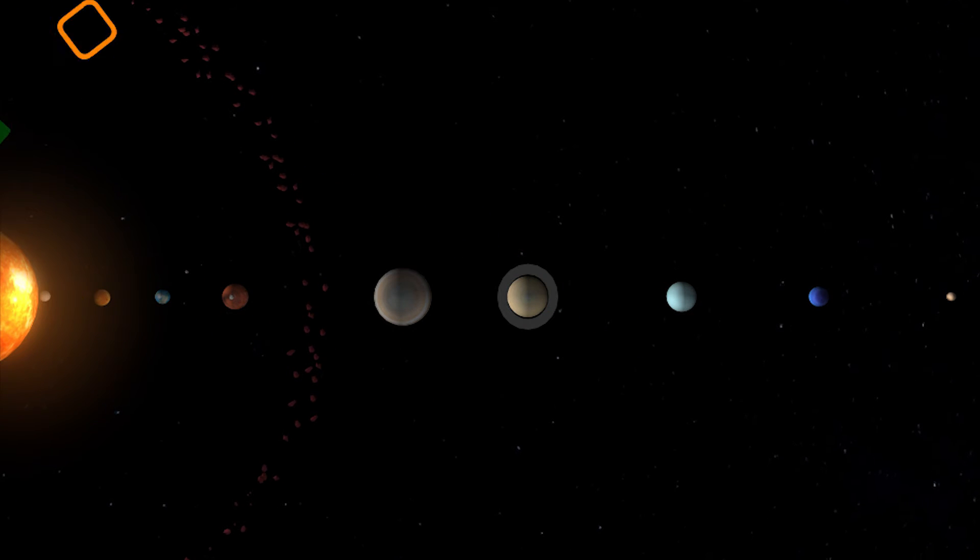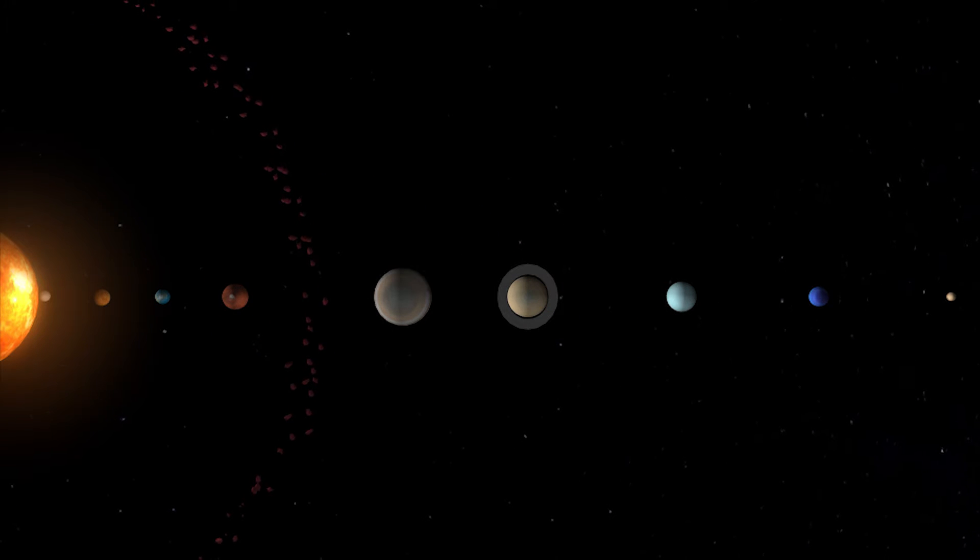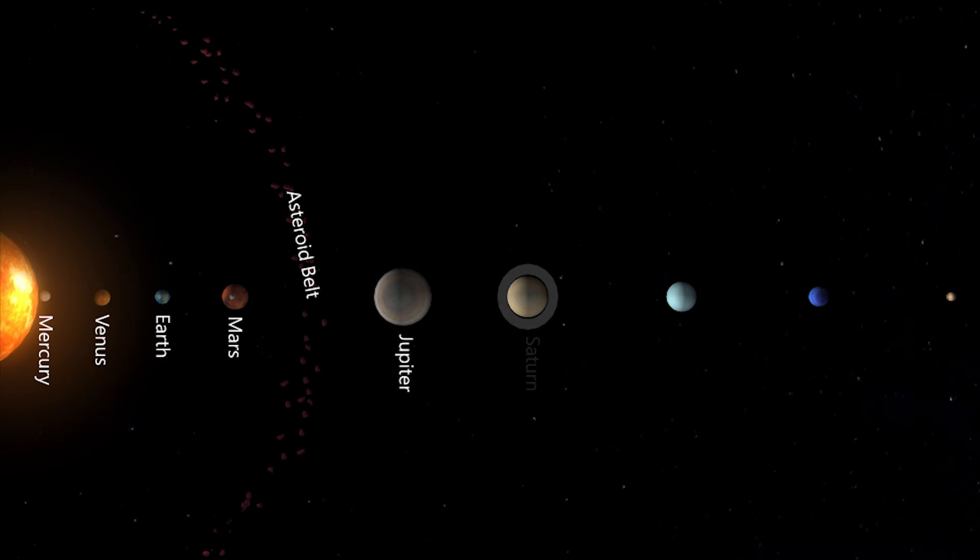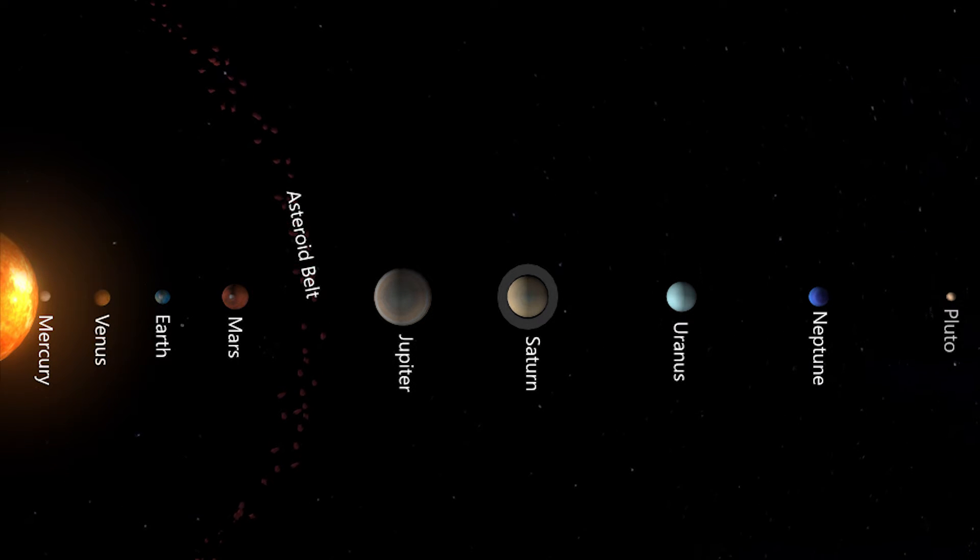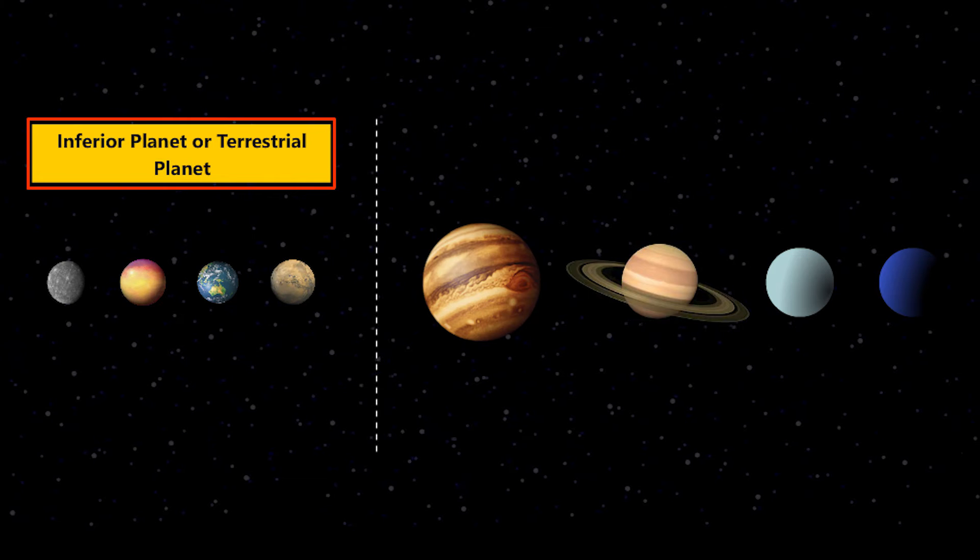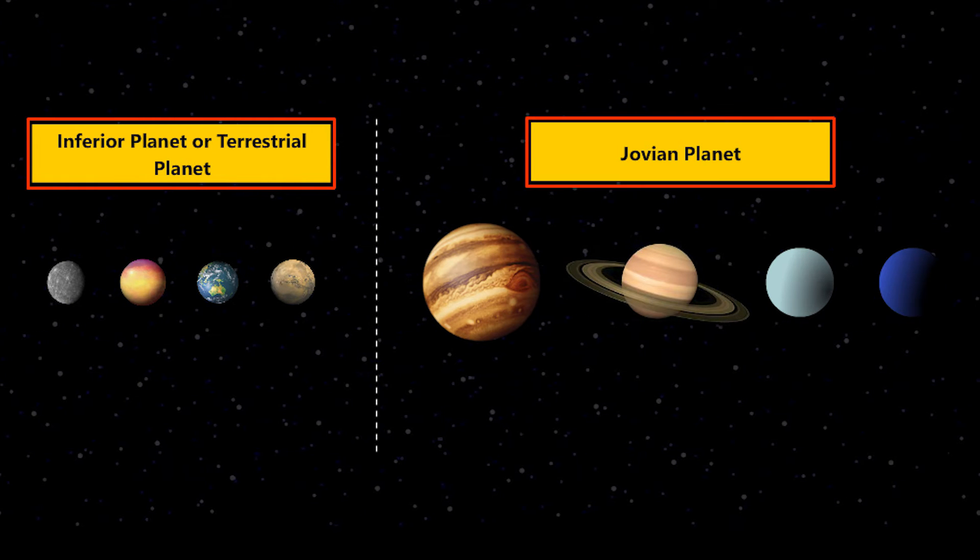There are 9 planets in the solar system: Mercury, Venus, Earth, Mars, Jupiter, Saturn, Uranus, Neptune and Pluto. But they categorize by their composition. The modern solar system is divided into two parts: inferior or terrestrial planet and Jovian planet.